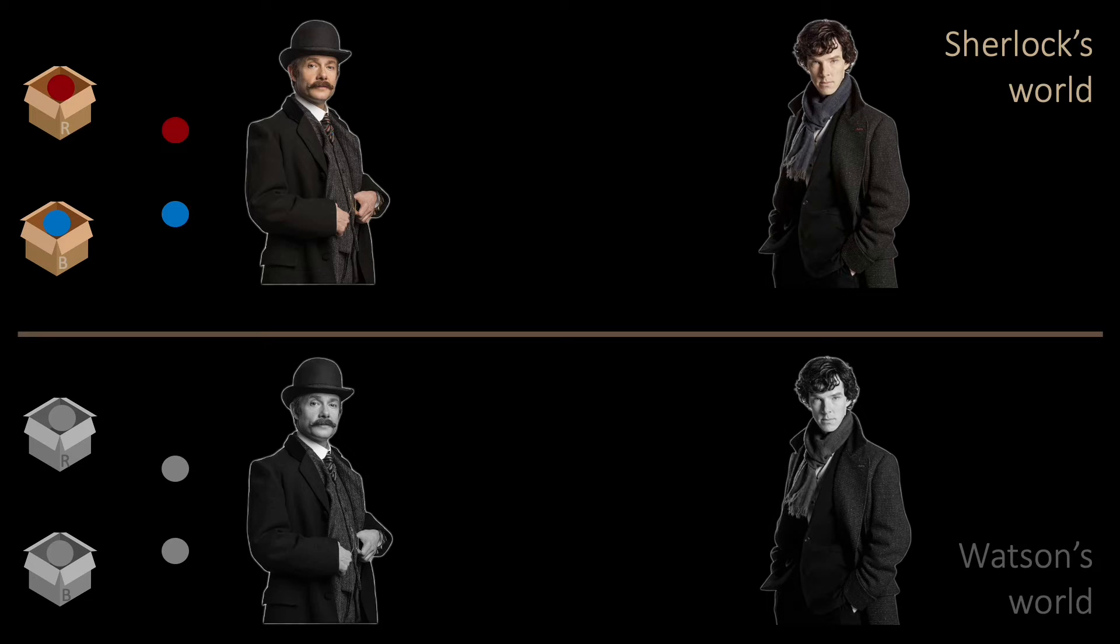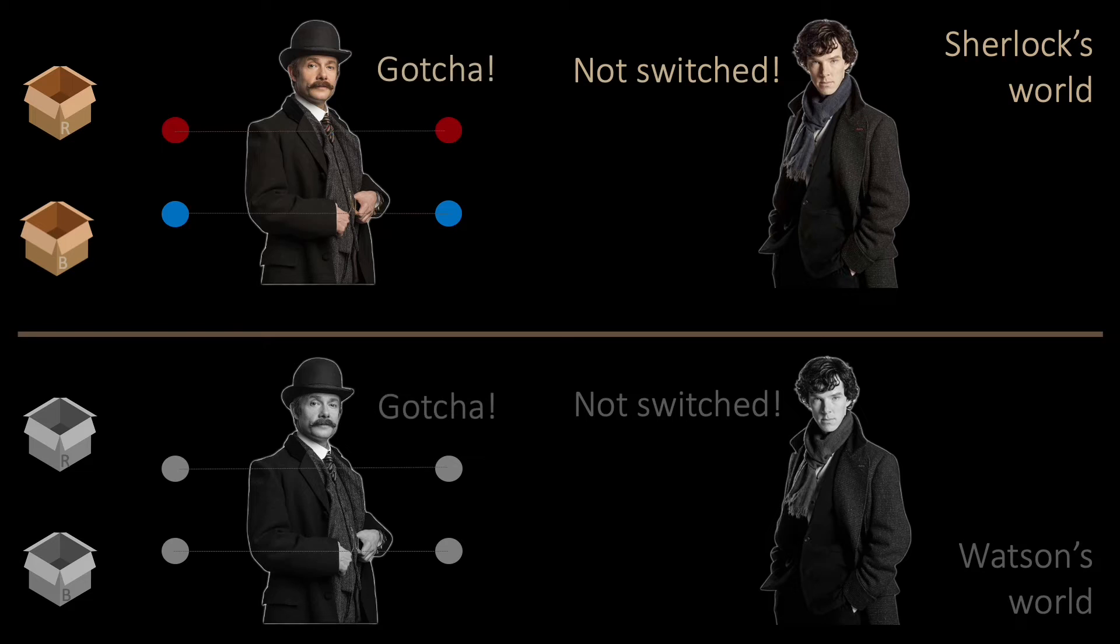Now he can do the following trick. First, Watson shows Sherlock's spheres. But then Watson shows his marked spheres. Based on Sherlock's answer, Watson can now infer the colors of Sherlock's spheres. For example, if Sherlock answers not switched...